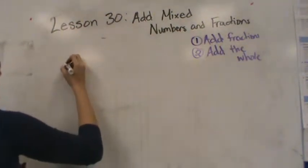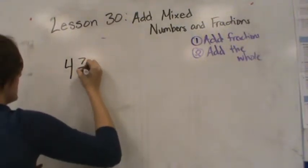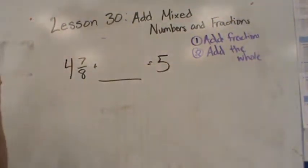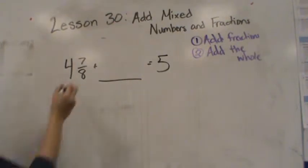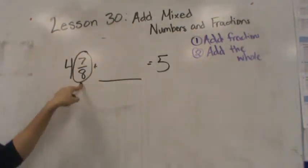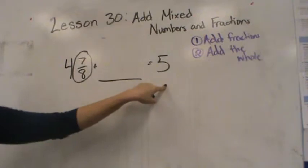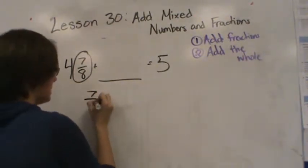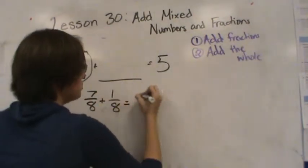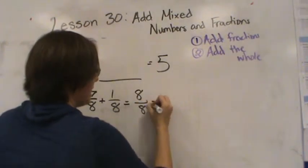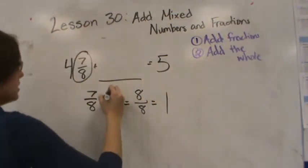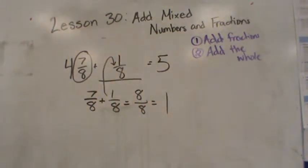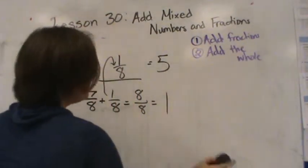Now let's look at it a different way. I have four and seven eighths plus something equals five. I know four is one away from five, so I need to look at the fraction — how many more eighths would get me to the next whole? Seven eighths plus one eighth equals eight eighths, and eight eighths is the same as one whole. So the answer needs to be one eighth.